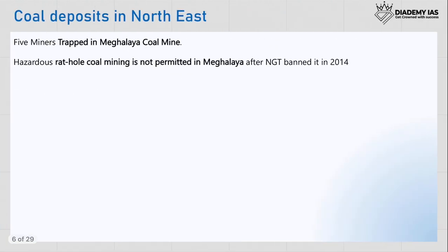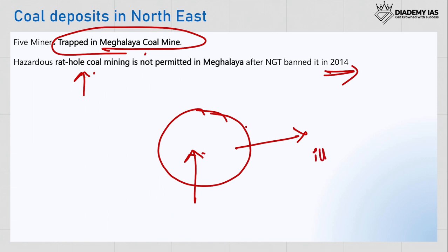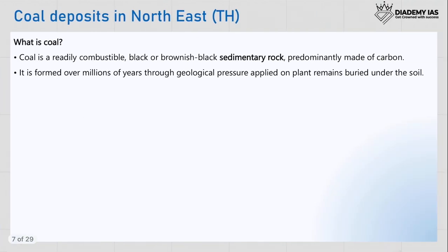Moving on to coal deposits in Northeast India — recently five miners were trapped in a Meghalaya coal mine. This relates to rat hole mining, where a small hole is made in the land and people crawl through it to bring back coal. As the name suggests, like rats they crawl into the land to extract coal. It is a very dangerous method and the NGT banned it in 2014, but it is still illegally practiced today, which is why five miners recently got trapped.